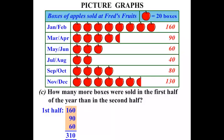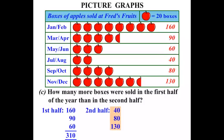Now what about the second half? The numbers required are 40, 80, and 130. When you add them up, we get 250. So how many more boxes? We're comparing 310 with 250, so we want to find the difference — we subtract. And the answer is 60 more boxes sold in that first half of the year.